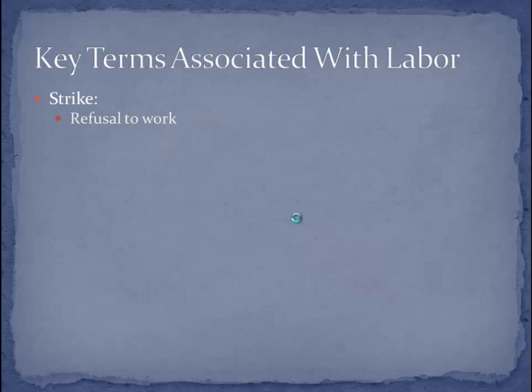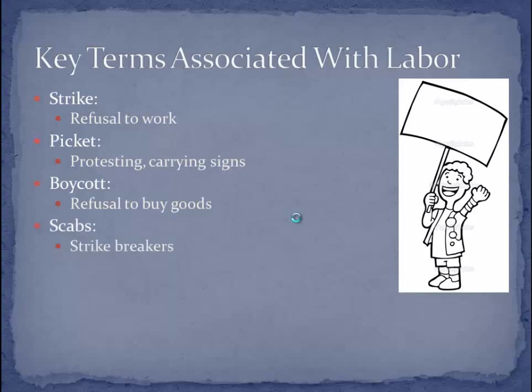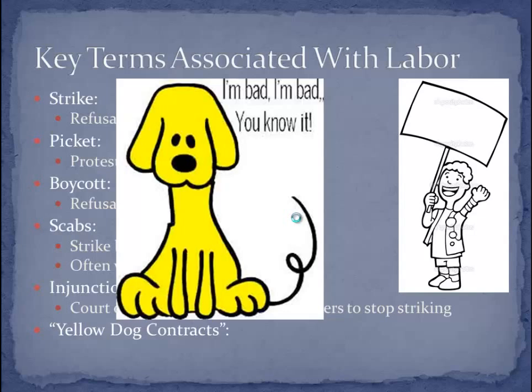Some key terms to know: a strike is a refusal to work, and workers on strike often picket by carrying signs. A boycott is a refusal to buy goods — labor unions often boycott goods from their place of employment when things aren't going well. A scab is a strikebreaker, someone who crosses the picket line and works while others are on strike; oftentimes these were immigrants. An injunction is a court order from the government, often used to force workers to stop striking. Yellow dog contracts are agreements that workers will not join a union, and if they do, they can be fired.